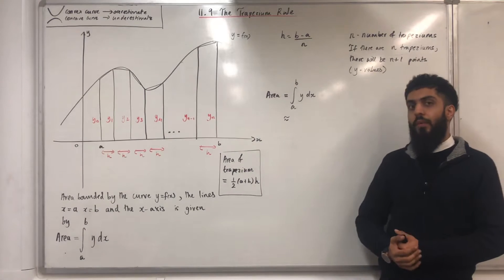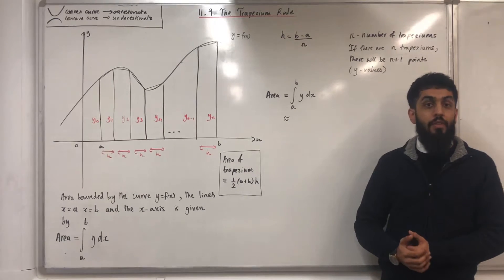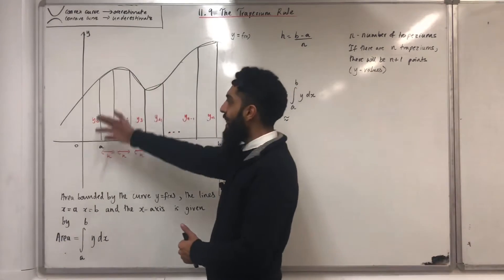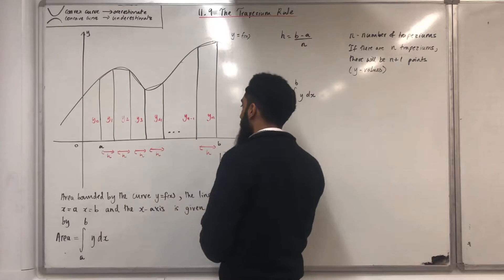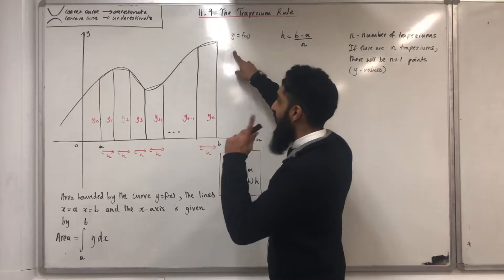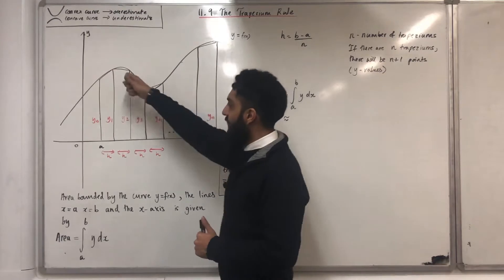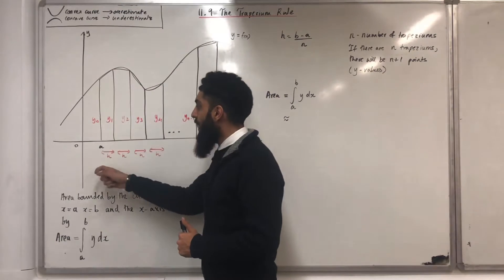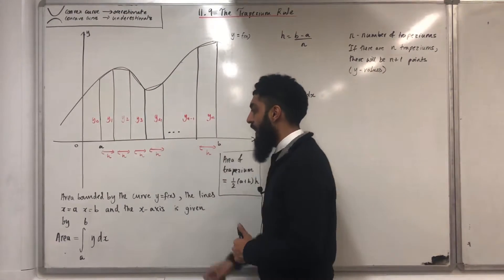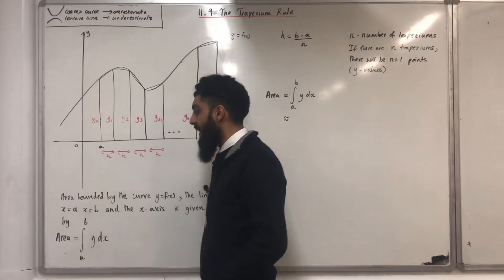For this video, I would like to go through how to derive the formula for the Trapezoid Rule. I've got a coordinate grid, y against x drawn. I've sketched the graph of y equals f of x. The area bounded by the curve y equals f of x, the line x equals a, the line x equals b, and the x-axis is given by the integral from a to b of y dx.